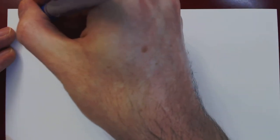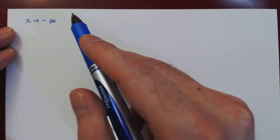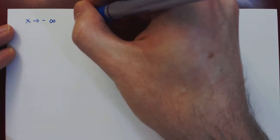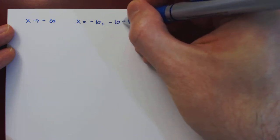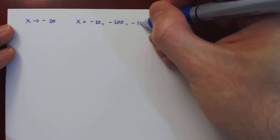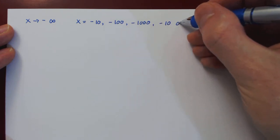We see on the right that x approaches negative infinity to mean that x is taking on larger and larger but negative values. So for example, we could say x is equal to negative 10, and negative 100, negative 1,000, negative 10,000, and so on.